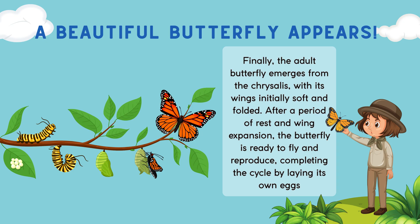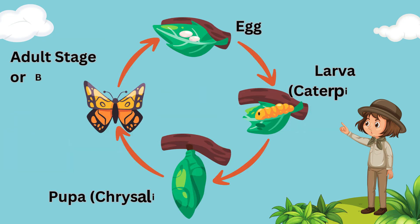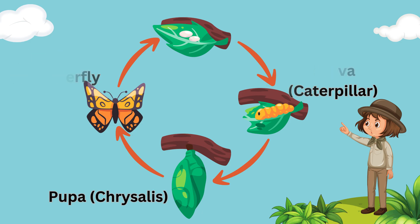In a nutshell, the life cycle of a butterfly involves four stages: number one is egg, number two is larva or caterpillar, number three is pupa or chrysalis, and number four is the adult stage.